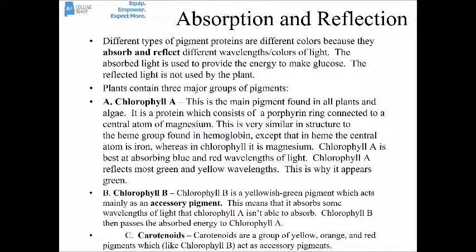Different types of pigment proteins are different colors because they absorb and reflect different wavelengths of light. The light energy that's absorbed is used to make glucose; the reflected light isn't used by the plant. Plants have three main groups of pigments. Chlorophyll A is the main one — a protein made of a porphyrin ring with a central magnesium atom. Its structure is similar to hemoglobin in us, except hemoglobin is built around iron whereas chlorophyll is built around magnesium. Chlorophyll A best absorbs blue and red wavelengths, reflects greens and yellows, which is why it looks green.